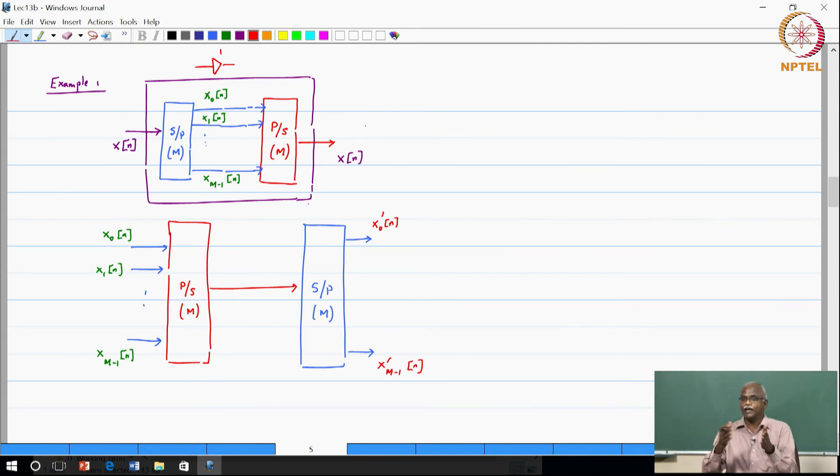Interesting task. You can verify that it is X0 of N, X1 of N dot dot dot XM minus 1 of N, all of them have got unity gain and show up as X0 prime of N which basically means that this is equal to X0 of N.